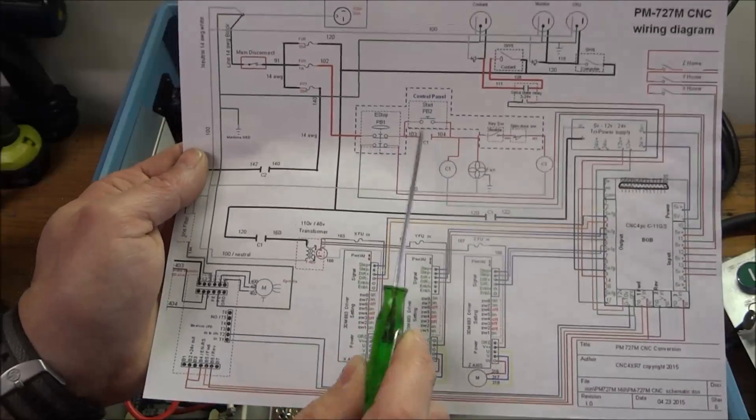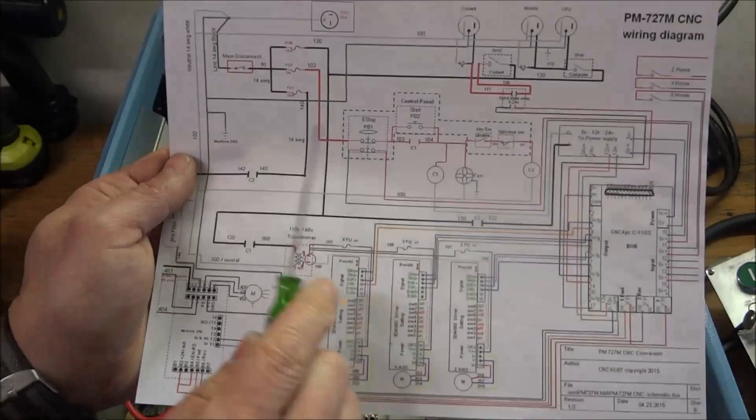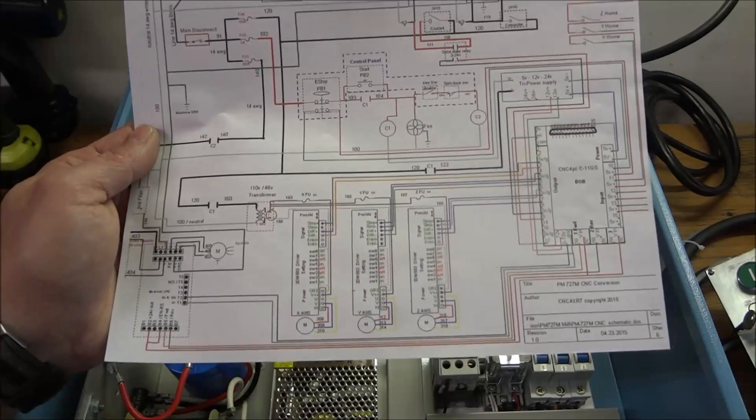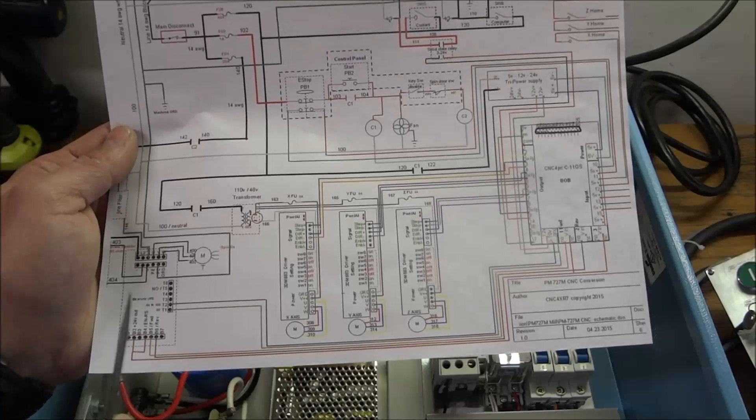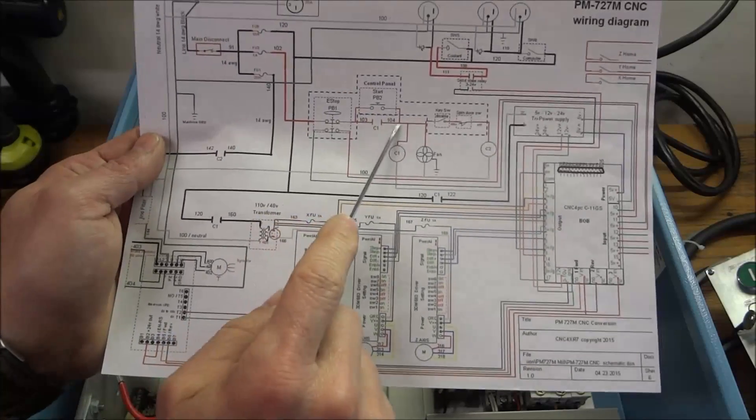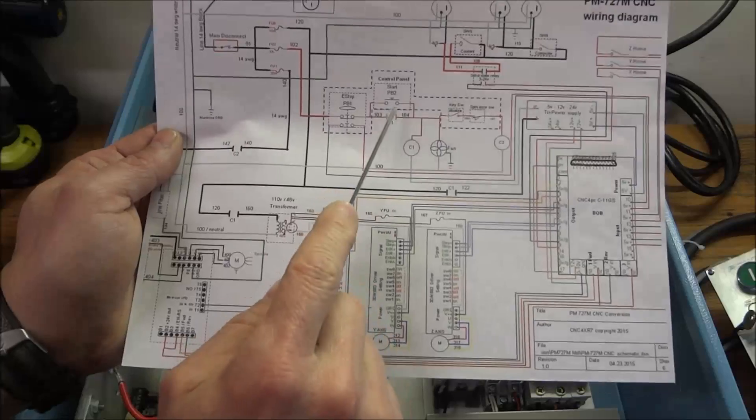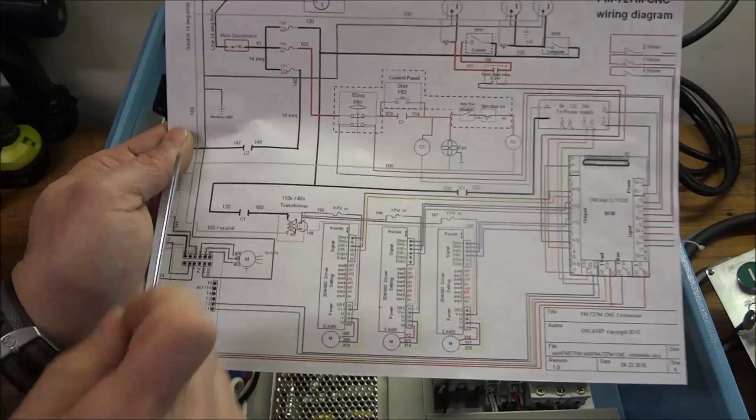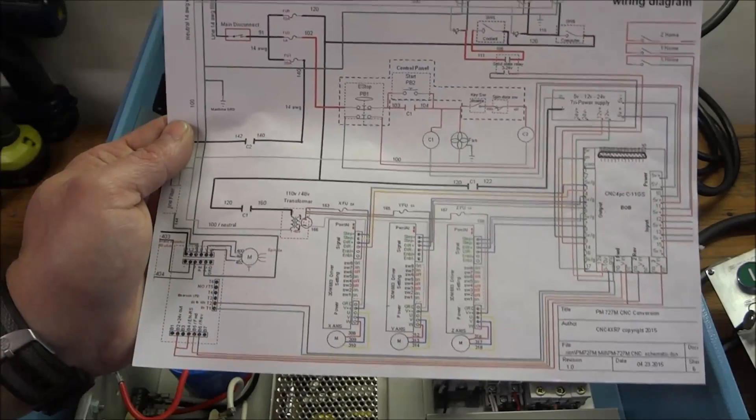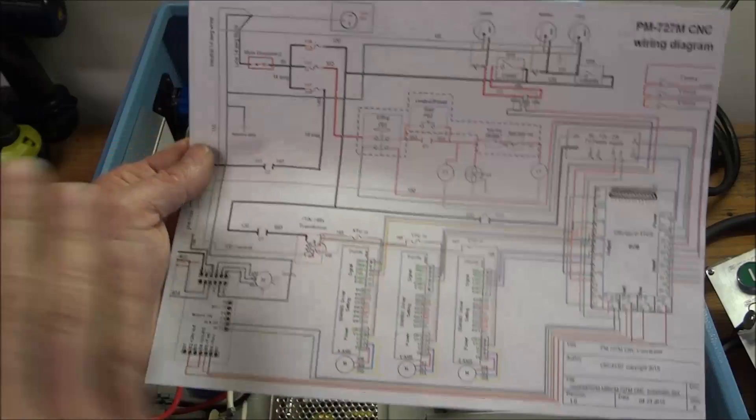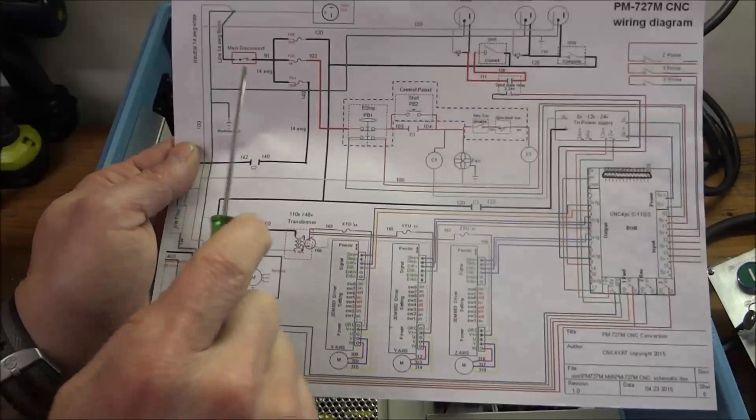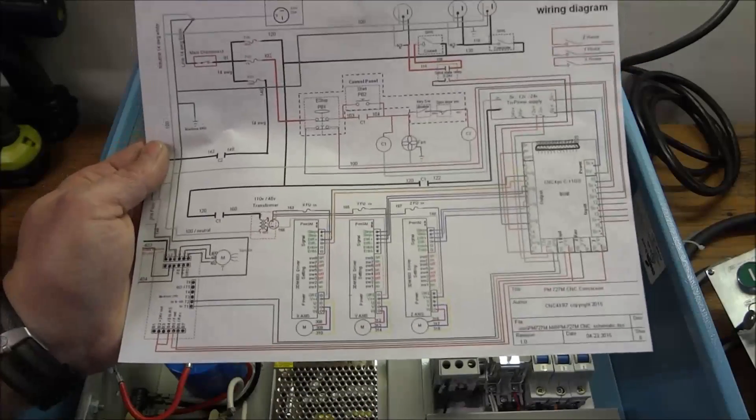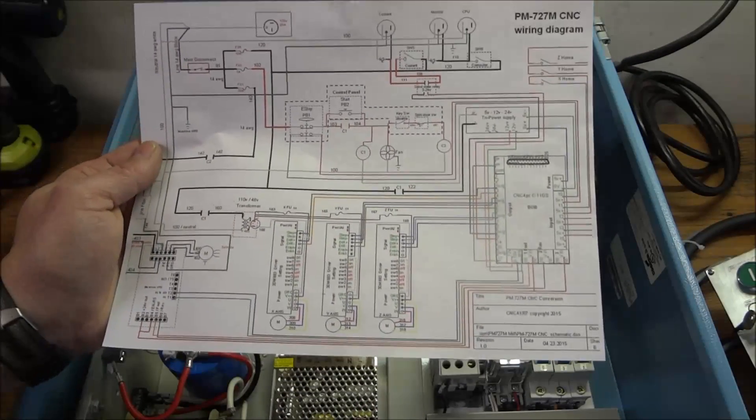Now why do we need this? Let's say you're running your machine and the power goes out. If you didn't have this and you just had this ran straight through without the push button and without the coil, without the contacts here, if you lose power then the machine is going to shut down. But as soon as power is reapplied, these are going to re-energize and your machine is going to start back up. That's not a good situation to be in.